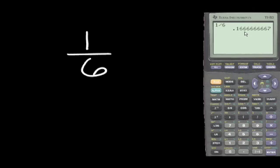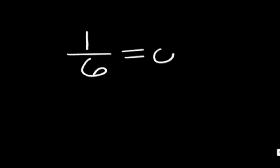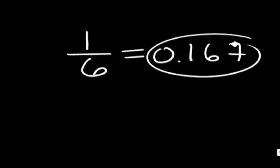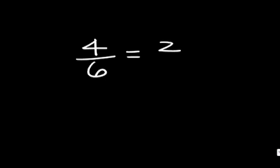So the answer is approximately 0.167. For less than five, there are 4 outcomes out of the 6 possible outcomes, which reduces to 2/3 as a fraction.